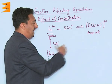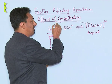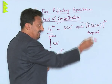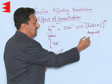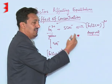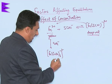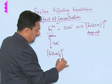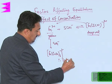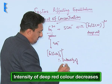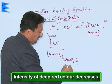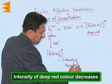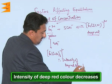As the concentration of the ferric thiocyanate complex ions decreases, the intensity of the deep red color decreases.